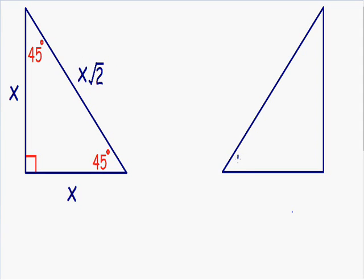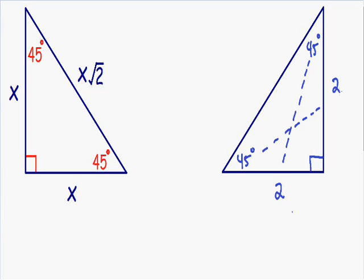In this example, this angle is 45 degrees, this angle is 45 degrees, and our last angle is 90 degrees. This will be an easier example because I'm going to give you the length of one of the shorter sides. Let's say that the length of one of the shorter sides is equal to 2. The sides opposite the 45-degree angles are always the shorter sides. Since this is an isosceles triangle, if one shorter side is 2, then the other shorter side is also 2.